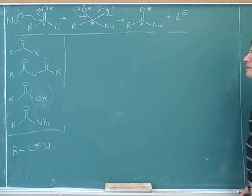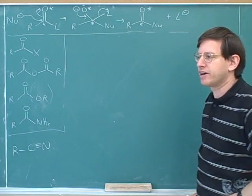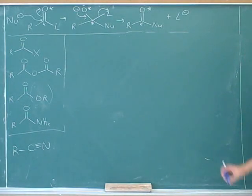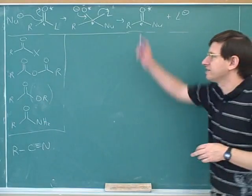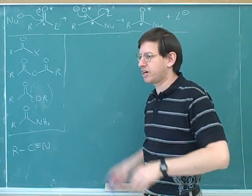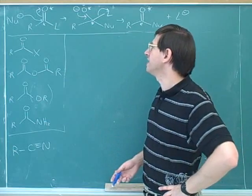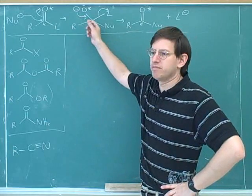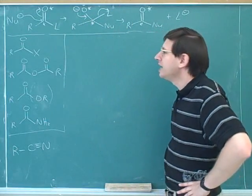Remember that this is going to be different from nucleophilic attack on aldehydes and ketones. For aldehydes and ketones, there were four different categories — category one, two, three, and four. Those four categories don't apply to carboxylic acids and acid derivatives. Carboxylic acids and acid derivatives are a whole different thing; they just have one main mode of attack.